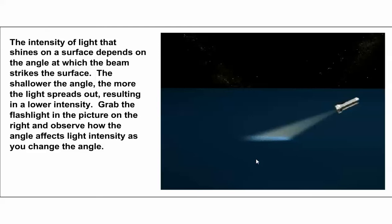The light is dimmer on the surface — it's not as intense. So even though the same amount of light is coming out of the flashlight, it's dimmer on the surface because of the lower angle of the light striking the surface. You could try that experiment at home with a real flashlight, but in a nutshell, you've seen the reason for the change of seasons.